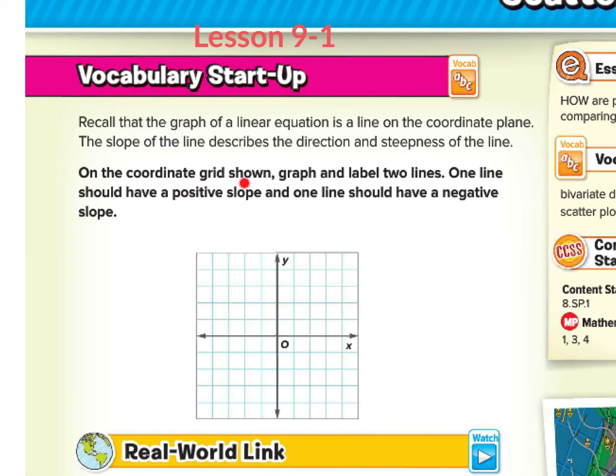On the coordinate grid shown, graph and label two lines. One line should have a positive slope, and one line should have a negative slope. Remember that a positive slope rises from left to right, and we have this arrow to show that it's a continuous slope. It's not a line segment. It continues beyond this point.